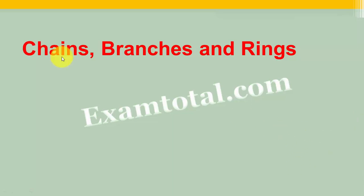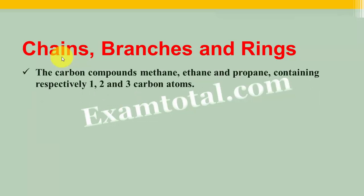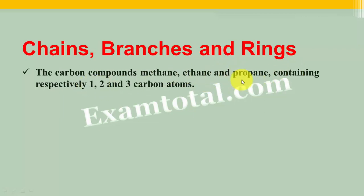As we already know, carbon has a special property that carbon atoms join together to form long chains. In the last video, we saw that carbon compounds form long chains. If there is only one carbon present, it is called methane. Then we studied about ethane — its structure and formula. Similarly, propane, which we have seen in the last video. They respectively have one, two and three carbon atoms in their compounds.